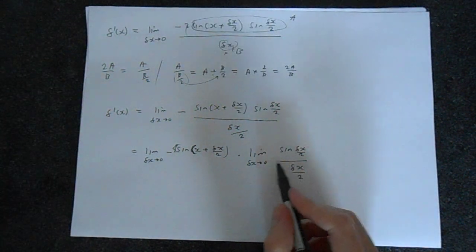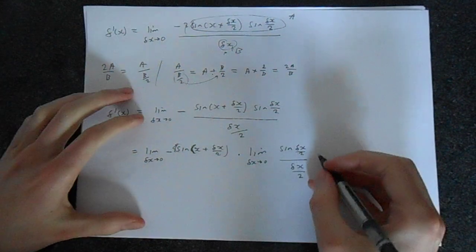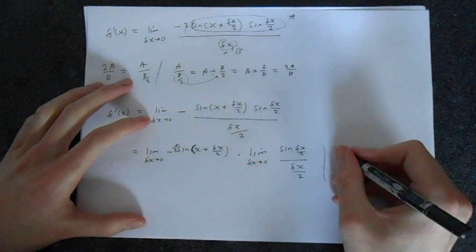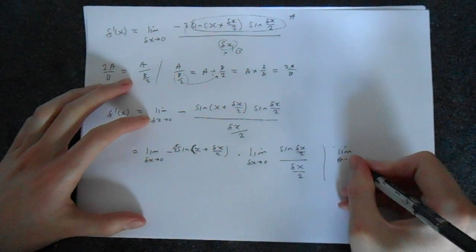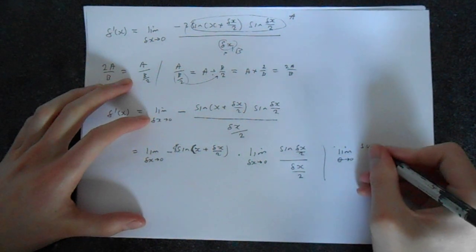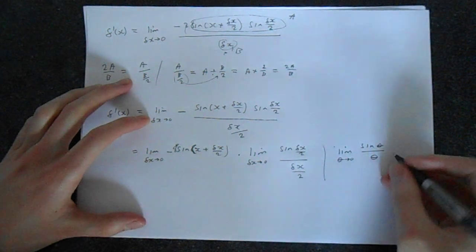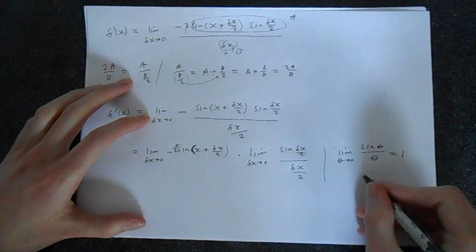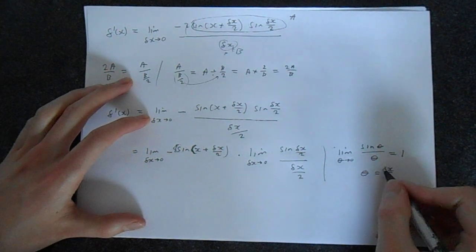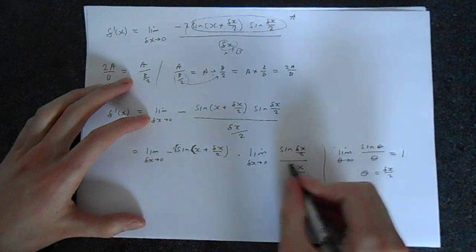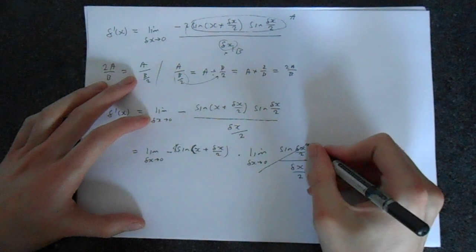Now there's a property associated with this limit which we can say that the limit as theta goes to 0 of sine theta divided by theta is equal to 1. So if we think of theta as delta x over 2, this expression, this expression, this expression are the same. So we can say that this whole limit is just 1.